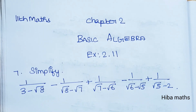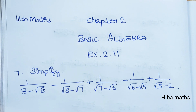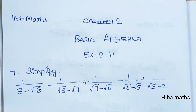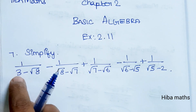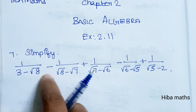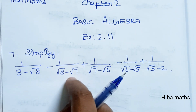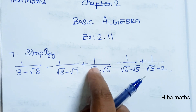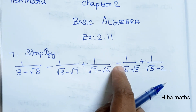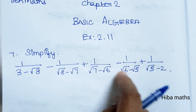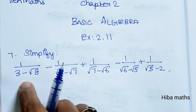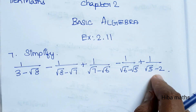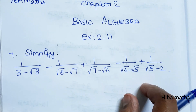Hello students, welcome to Heba Max 11th standard Math, Chapter 2 Basic Algebra, Exercise 2.11, 7th question: simplify 1/(3 - √8) minus 1/(√8 - √7) plus 1/(√7 - √6) minus 1/(√6 - √5) plus 1/(√5 - 2). We have all terms divided by radical values here, and if we simplify we will use the conjugate method.